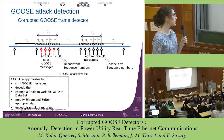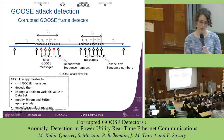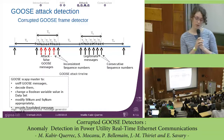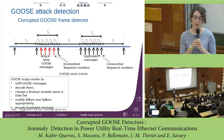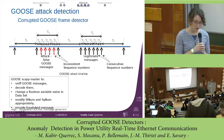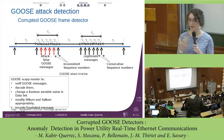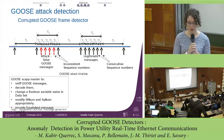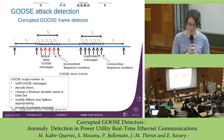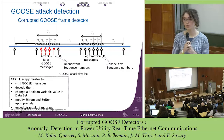Here is the algorithm of our fraudulent GOOSE message generator. It is based on Scapy — a Python script — and I built on prior work by Hoyos, a researcher from Boulder University (reference in the paper). The Scapy master sniffs all GOOSE messages, decodes them, and changes some Boolean variable by switching its value. It then modifies the state number and sequence number appropriately, encodes the fraudulent message and sends it.